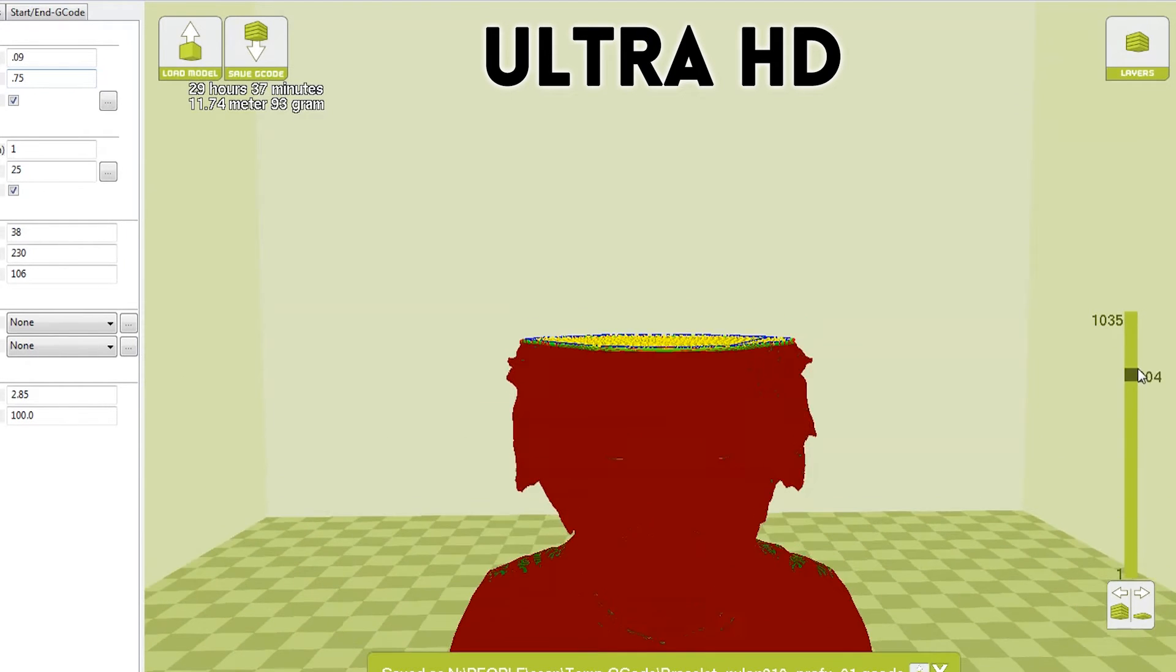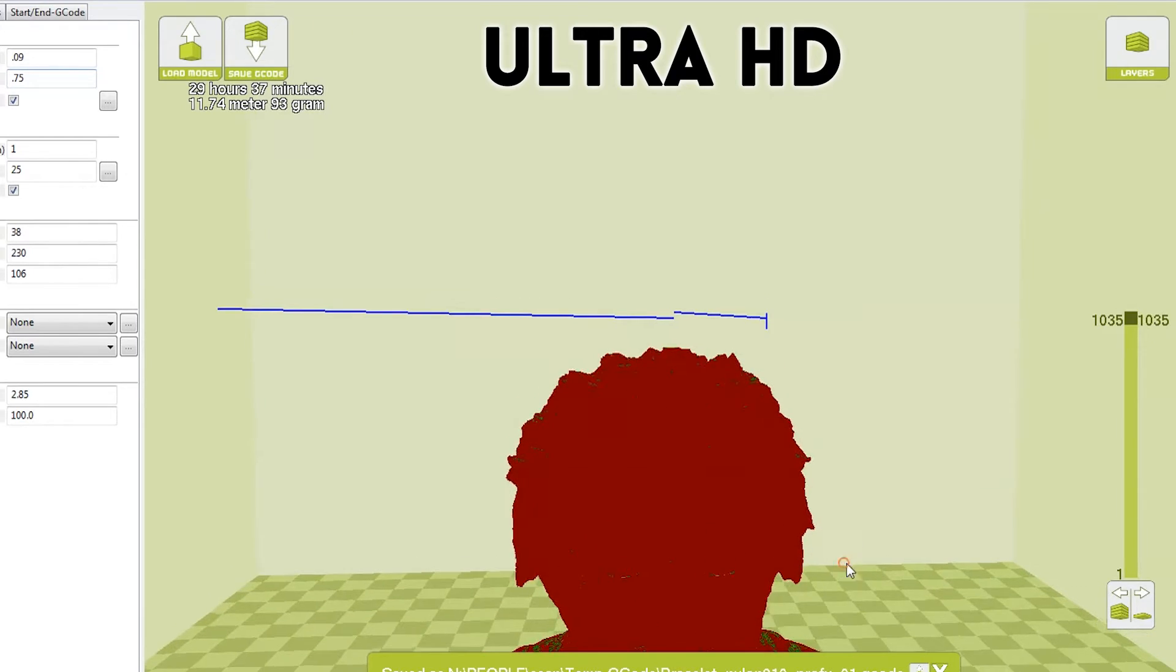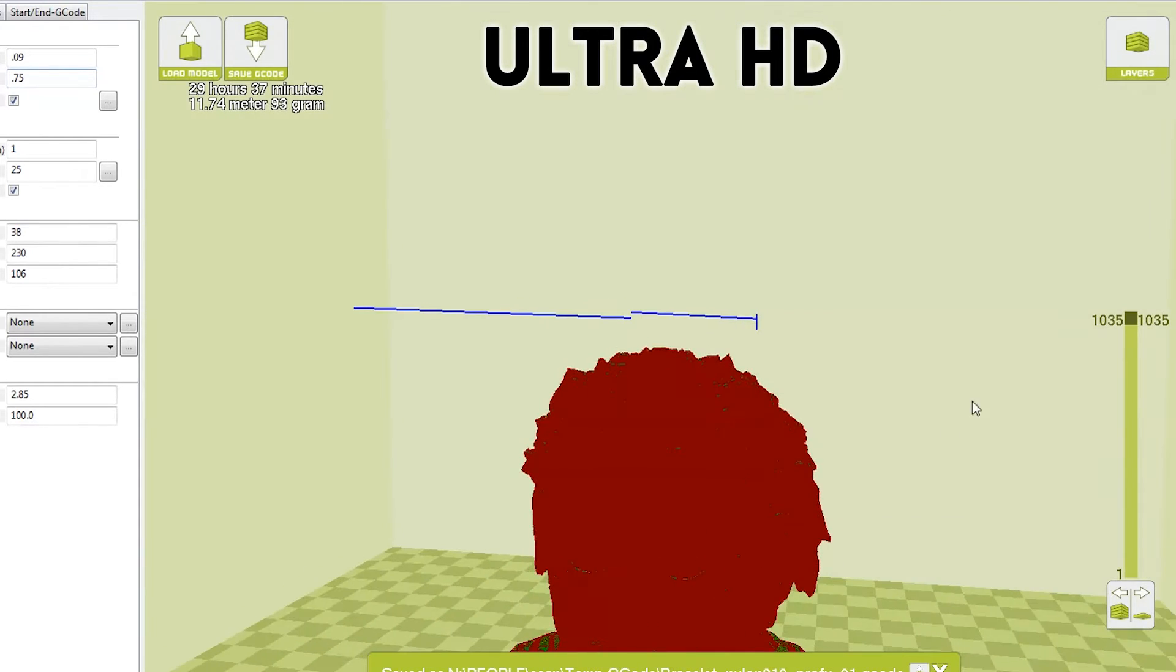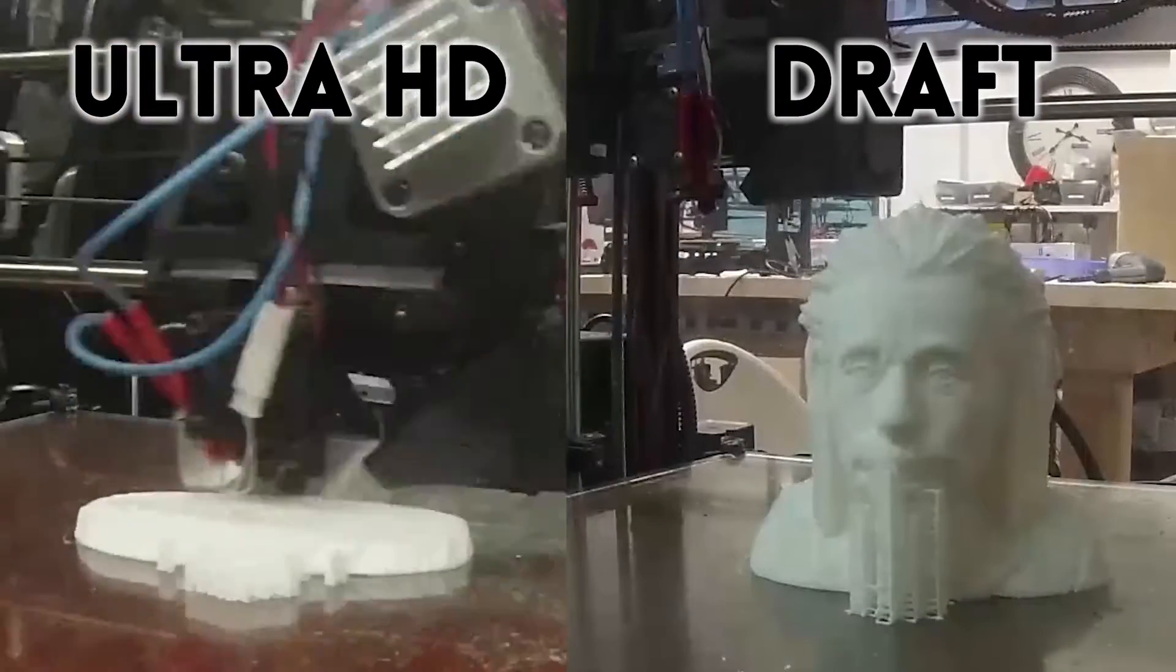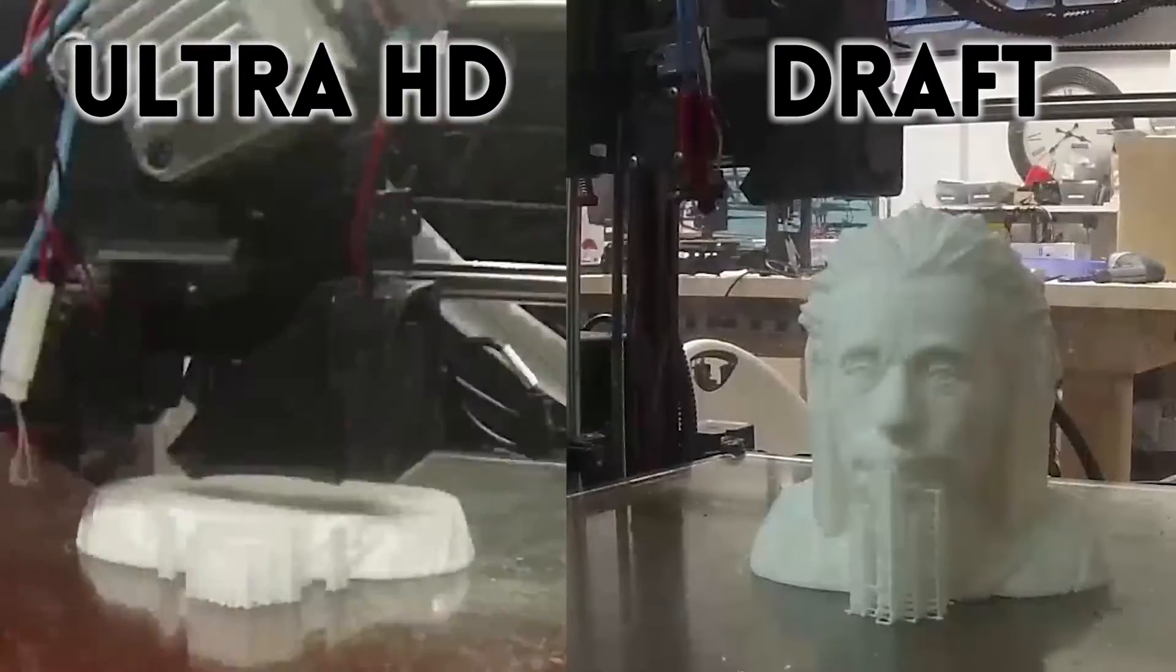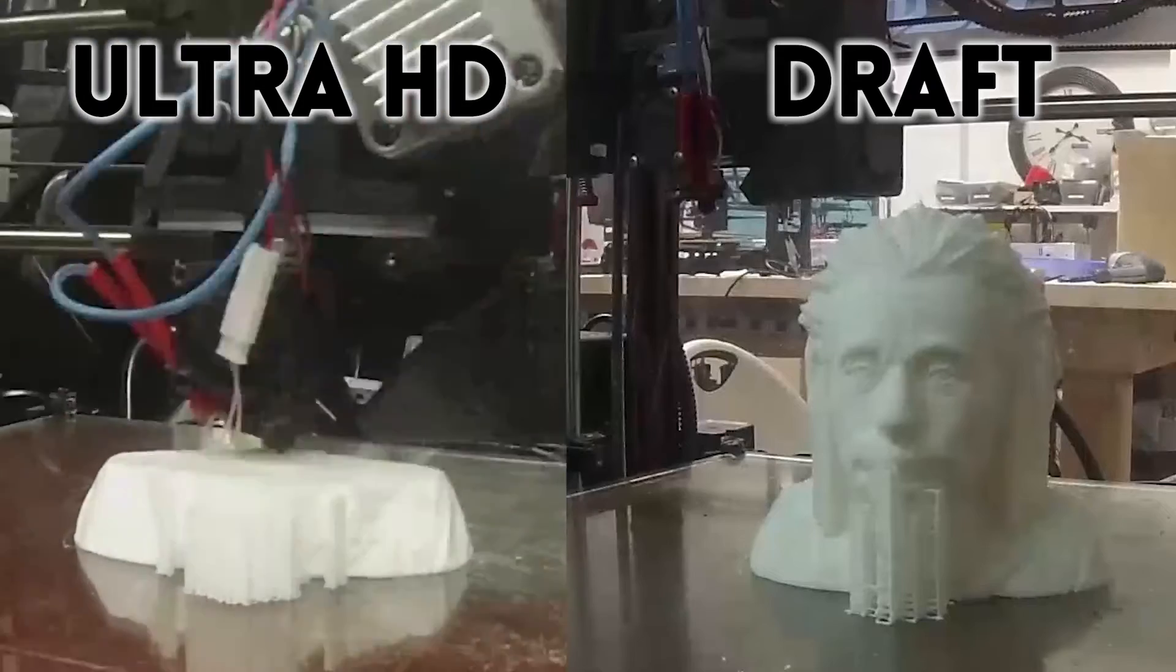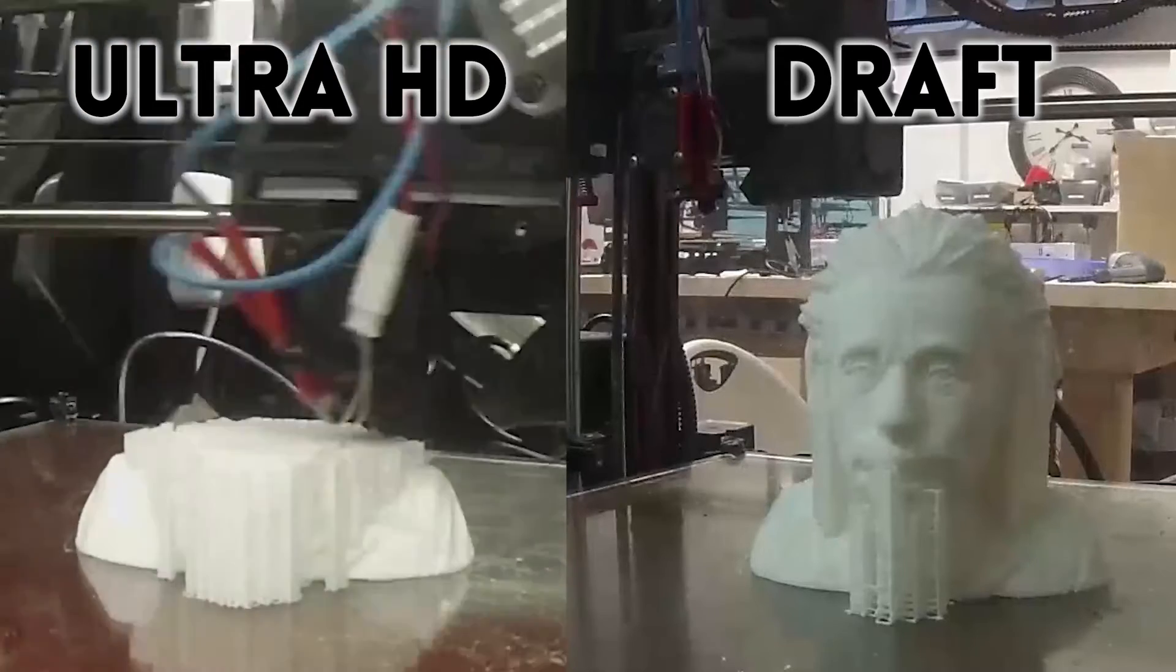These quality options drastically change the amount of time required to print. An Ultra HD resolution print will literally take 10 to 15 times as long as the exact same print in draft. There are roughly 4.5 times as many layers in Ultra HD, and the nozzle is less than half the diameter.